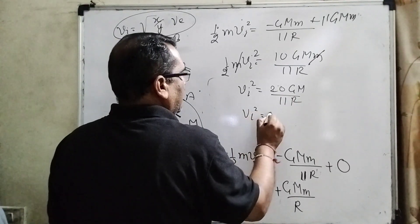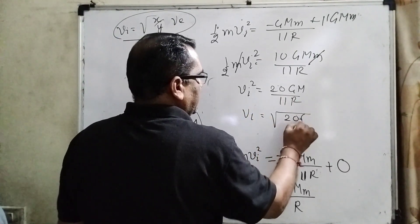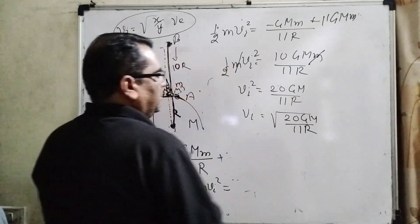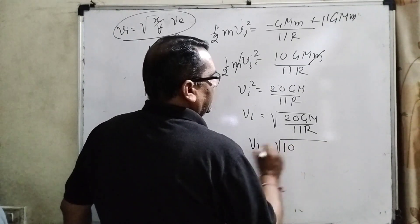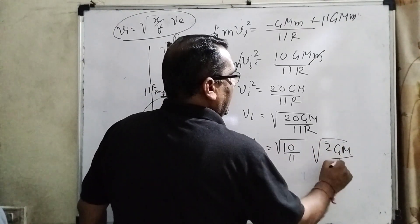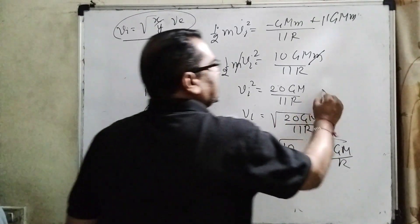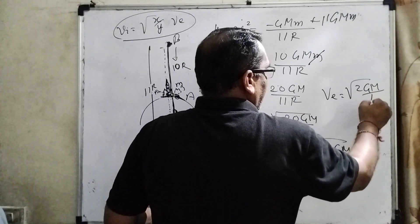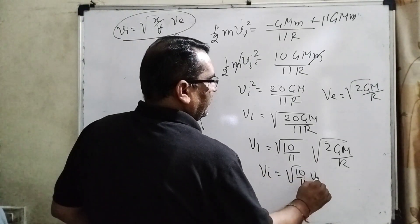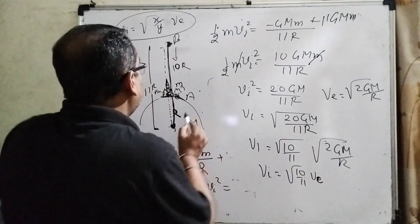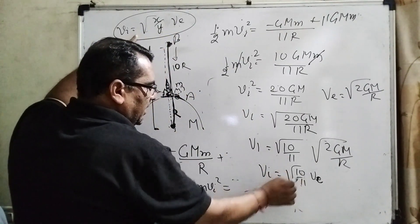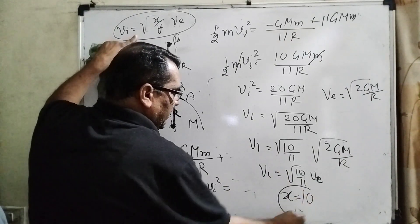Then Vi squared can be written as 20GM/11R, so Vi equals root(20GM/11R). You can see that Vi equals root(10/11) times root(2GM/R). This can be written in terms of escape velocity, because escape velocity Ve equals root(2GM/R). So Vi equals root(10/11) times Ve. Comparing with the given form root(x/y) times Ve, our correct answer is x equal to 10.